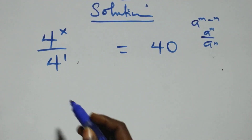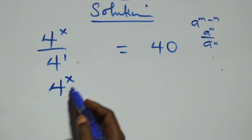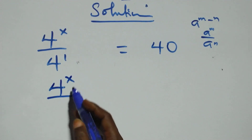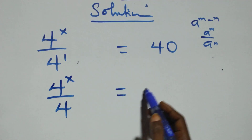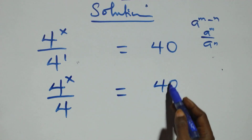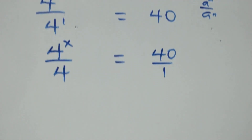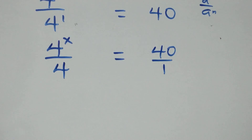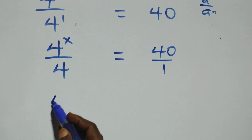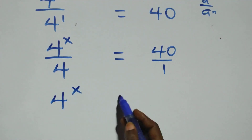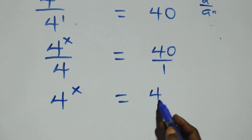Then here, we can write this as 4 raised to power x over 4 raised to power 1 — that is 4 — equals to 40 over 1. The next step here, we cross multiply. 4 raised to power x times 1, same thing as 4 raised to power x, equals to 40 times 4.